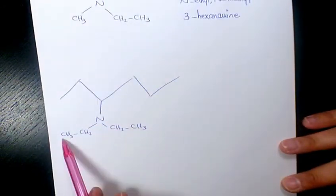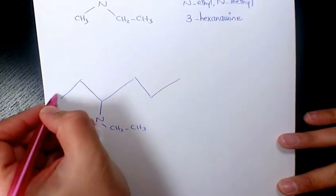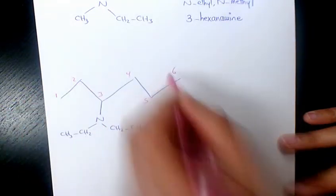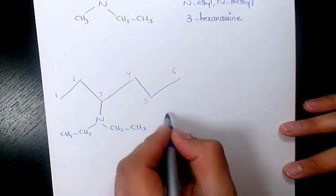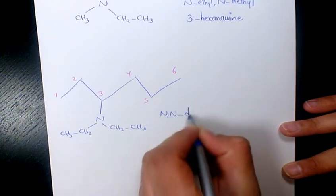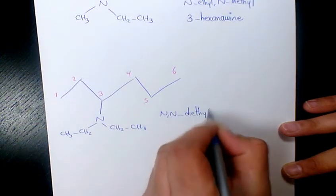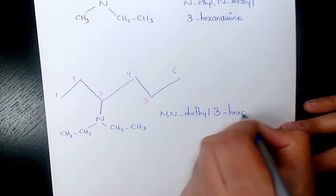We have two ethyl groups here again. We start from this side. So that's going to be N,N-diethyl-3-hexanamine.